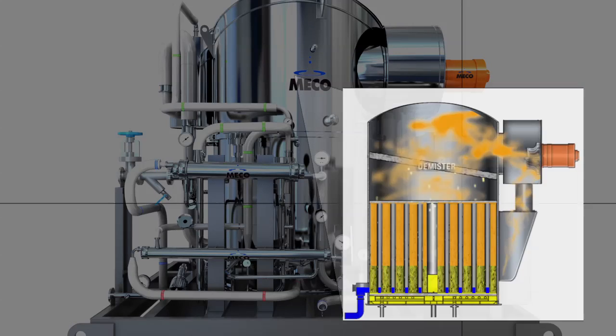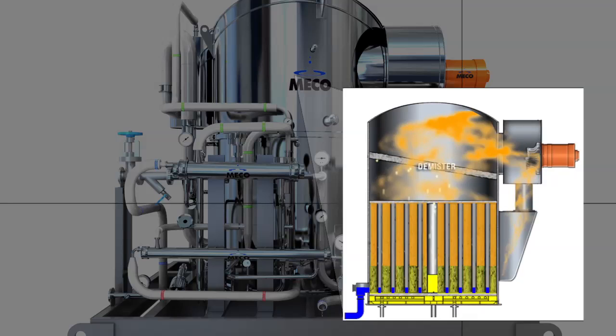A demister removes entrained water droplets from the vapor which is withdrawn by the compressor. When the vapor is discharged in the evaporator on the outside of the tube bank, it gives up most of its latent heat to feed water inside the tubes. More vapor is generated and the process continues.